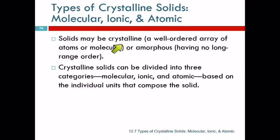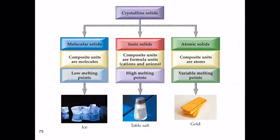We're going to look at the crystalline solids, and those can be further divided into three categories: molecular, ionic, and atomic. Here's a nice flow chart that gives us the whole thing in one slide. Crystalline solids. One subcategory are molecular solids.